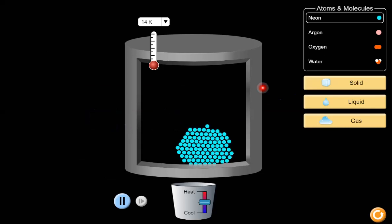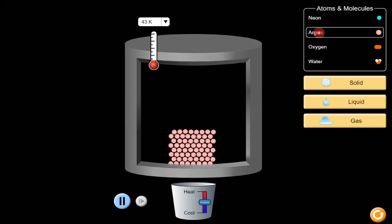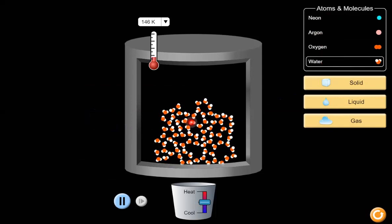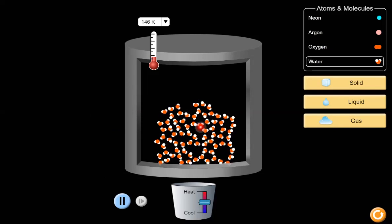We're going to highlight six different variables that you can change in the simulation as you experiment. First we have the atoms and molecules. You can click on neon or argon or molecules such as oxygen and water, and each time you see that they show up inside your container.